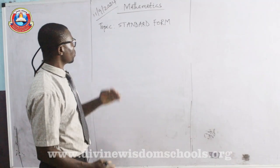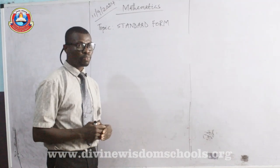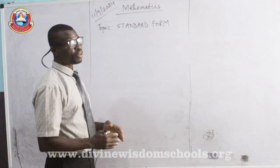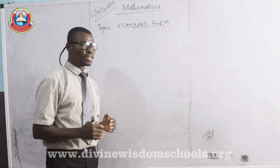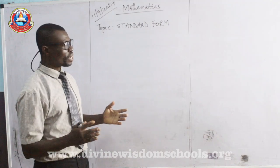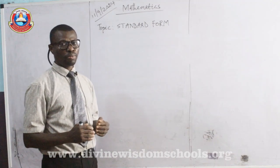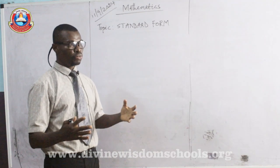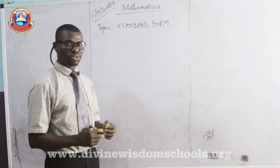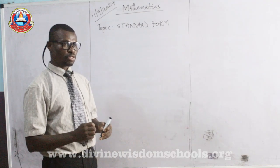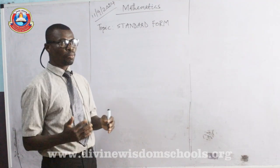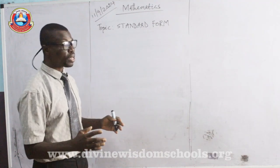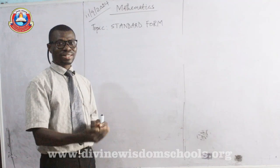We are considering a topic called Standard Form. And what is Standard Form? Before I define this, I have to let us know certain things. Sometimes, in solving mathematics, we must have come about some numbers that are too large for us to write. We find it difficult to express. So, the short form of expressing this kind of numbers is what we refer to as Standard Form.